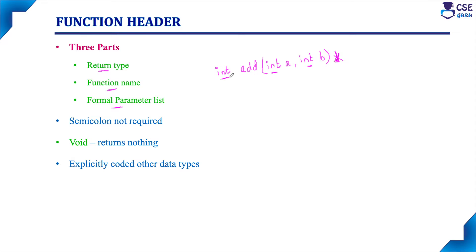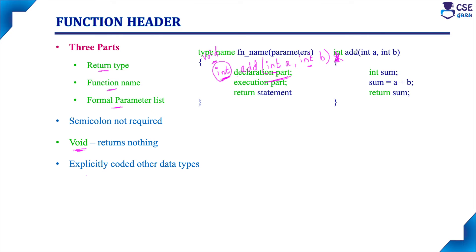Instead of int, if the function is not going to return any value, we can write void. The void data type means the called function does not return any value to the calling function — void returns nothing. For other data types, we specify the data type, a space, then the function name, immediately followed by an open bracket, then the parameter list separated by commas, then close the bracket. The function header must not end with a semicolon. For example: int add(parameter list) — int is the return data type, add is the function name, and that is the parameter list.